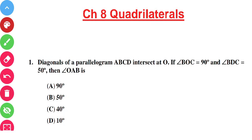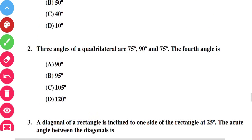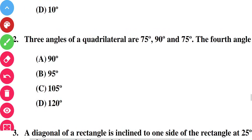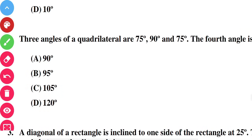Now moving to question number two: the angles of a quadrilateral are 75°, 90°, and 75°. You have to find the fourth angle. You know that the sum of all angles of a quadrilateral is 360 degrees, so subtract the sum of these three angles from 360.